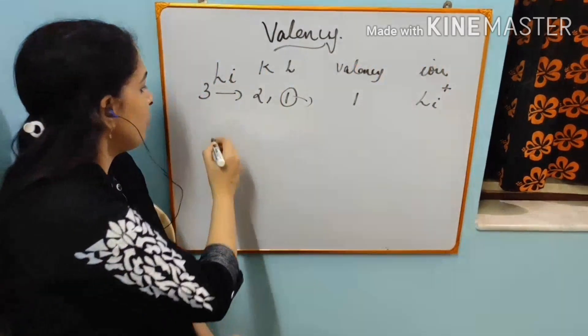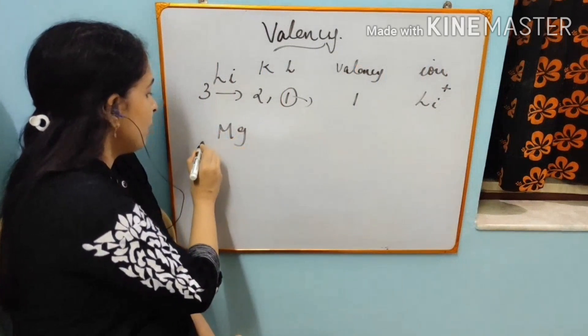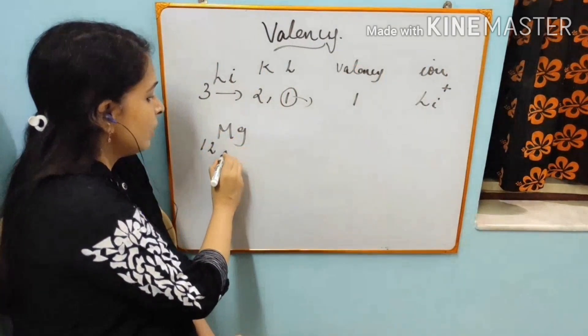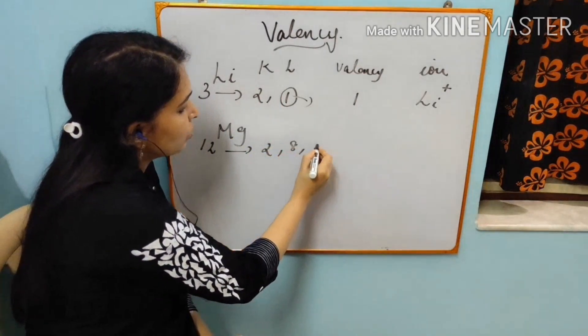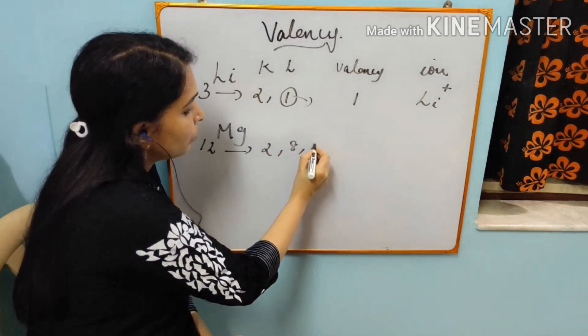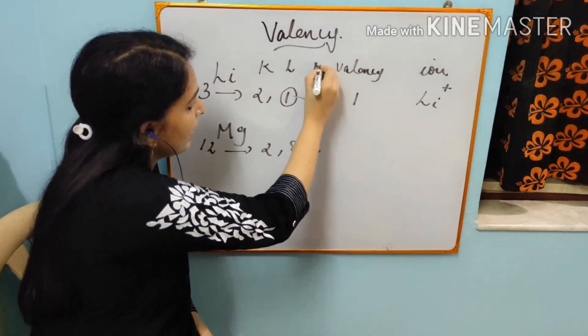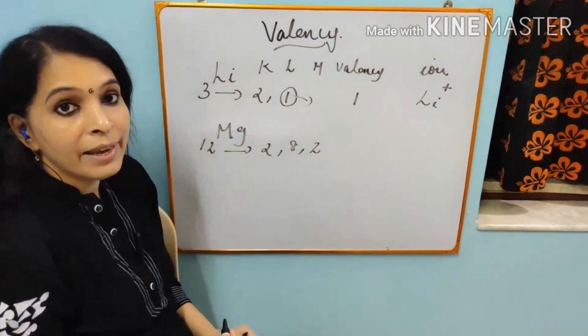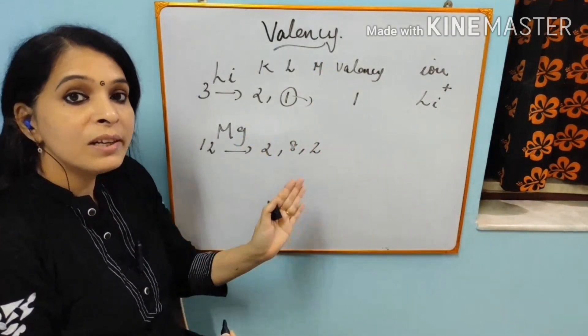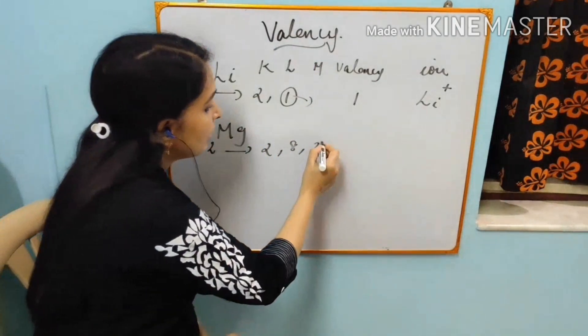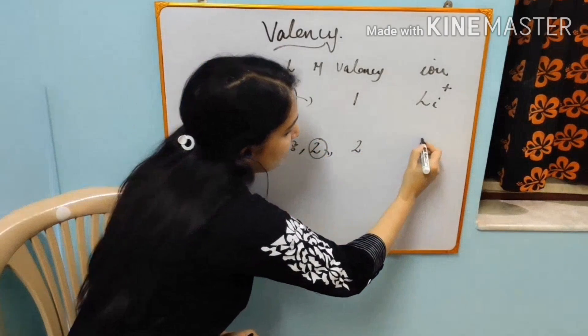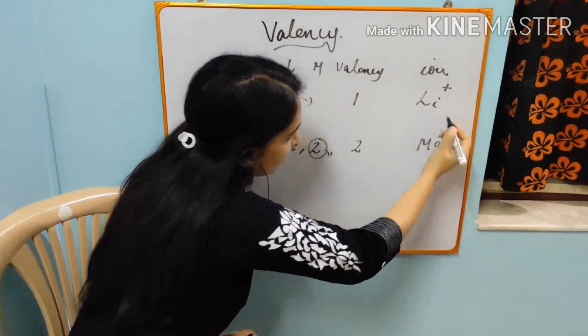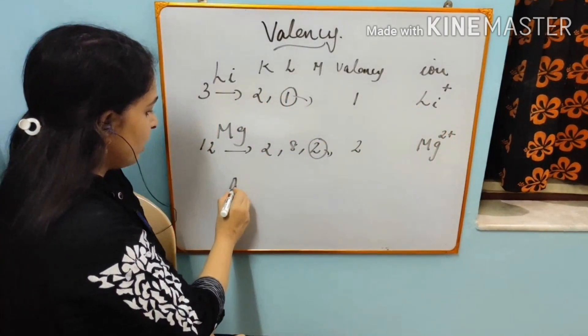Next is Magnesium. Atomic number is 12. Electronic configuration is 2, 8, 2. K, L, M shell. Two electrons are there. Again, this is a metal. So it will give out electrons. It will give out two electrons. So valency is two. And it will become an ion, Mg2+.